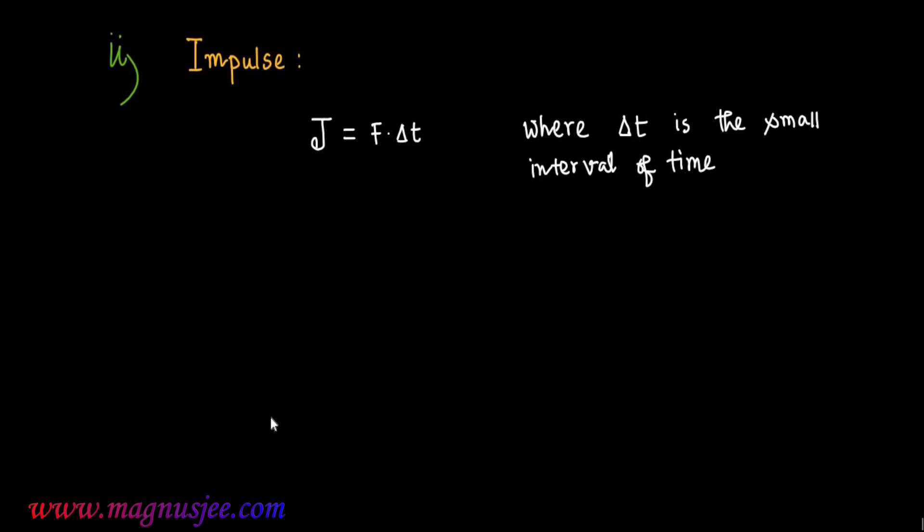Now the dimension of J, dimension of impulse, is equal to dimension of F and dimension of Δt, where F is the force acted on the body.